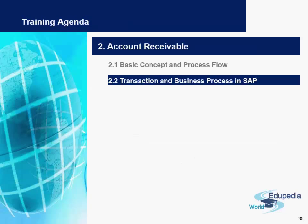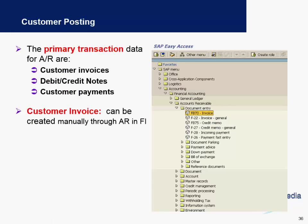Now let us look at some of the transactions and business processes in accounts receivable. We have the primary transaction data — for example, customer invoices, debit and credit notes, and customer payments. Let us look into these one by one.